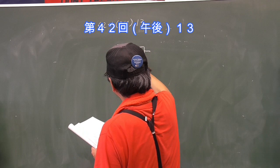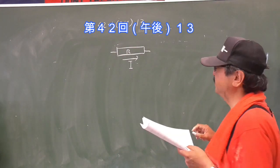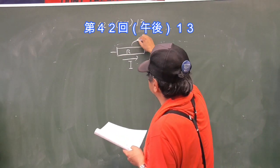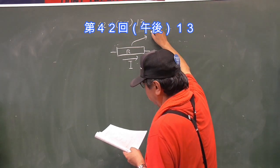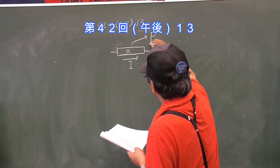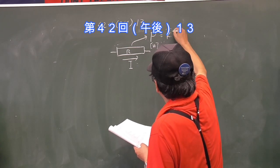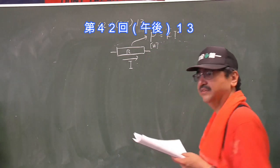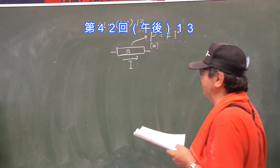42回の午後の13番ですね。1オームの抵抗器の両端電圧があって、これも初見の問題ですね。多分かなり引っかかった人多いかなと思います。1オーム抵抗があって電流が流れる、その時の電力というものはワットですね、W=Ri²ということ、これはもう速答できてください。